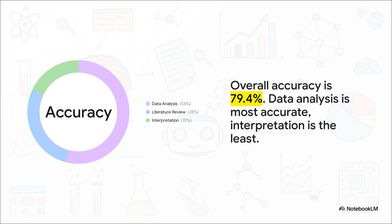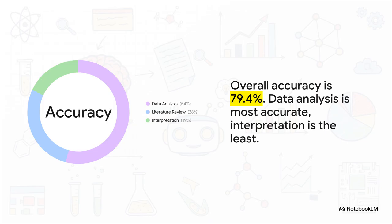But, and this is a really important but, when it comes to interpreting the meaning between the data and the literature, the accuracy drops to about 58%. This shows us that while it's an absolutely incredible tool for exploring, that final step of critical human judgment is still completely essential.